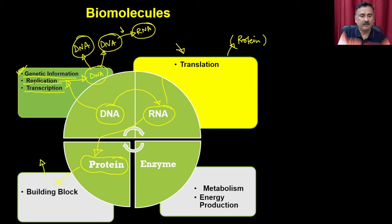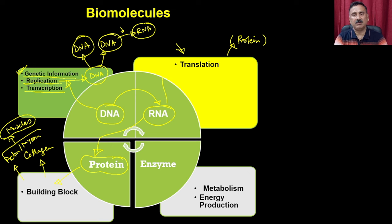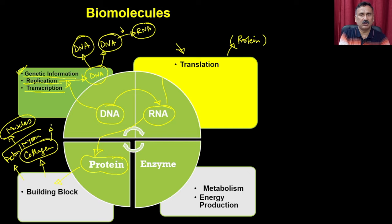We have different types of proteins serving as building blocks — for example, collagen, and actin and myosin, which are responsible for generating muscles. Because of actin and myosin fibers, you can walk and run. Collagen is the main fiber responsible for generating different types of bones, as collagen gets calcified. Other structural proteins include keratin, found in hair.